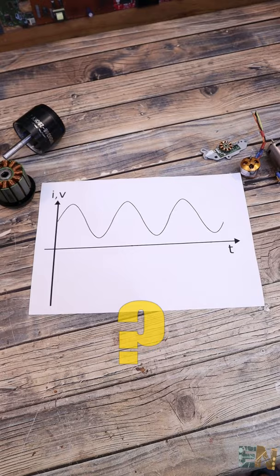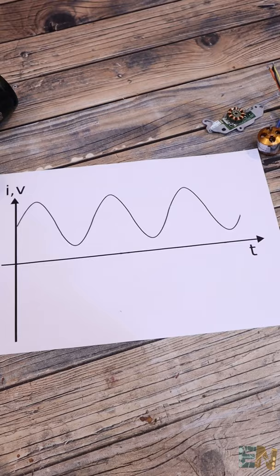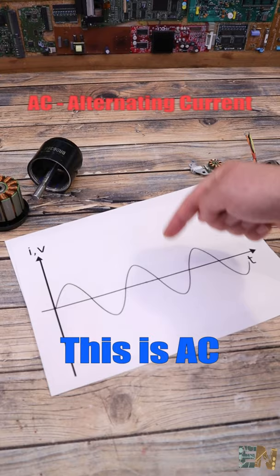I mean yes, this is an oscillating signal, but in order to be AC, it must pass the zero value and get back. Because AC stands for alternating current, so it must alternate between phases, from positive to negative and backwards.